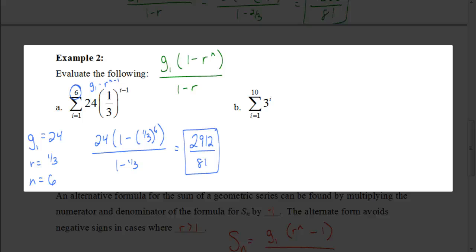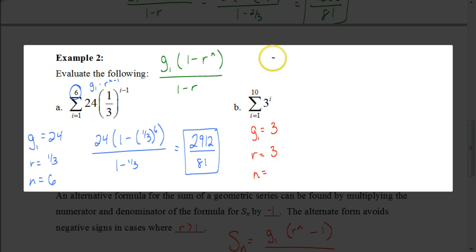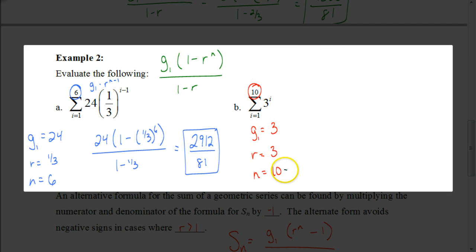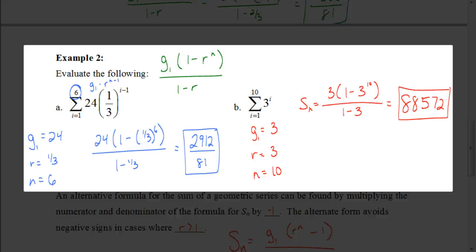I'm going to have you do the next one on your own, but let's get you started because this one's a little different. To find the first term, put 1 in for i: 3 to the first power is just 3. To find r, you could write out the series — the second term is 3 squared which is 9, and the third is 3 cubed which is 27 — so you're multiplying by 3 each time. We can also see we're going to have a total of 10 terms in the series. Pause the video, plug the numbers in, and check your answer: you should get 88,572.